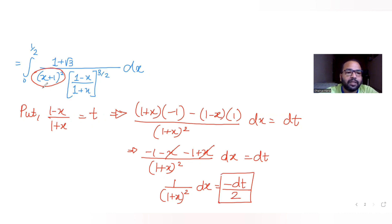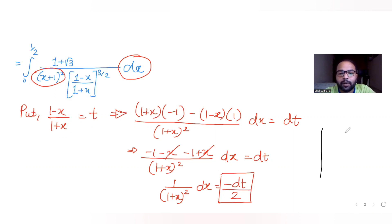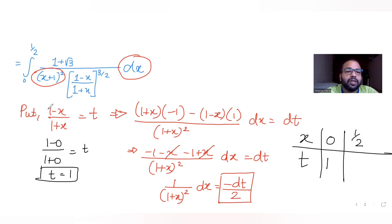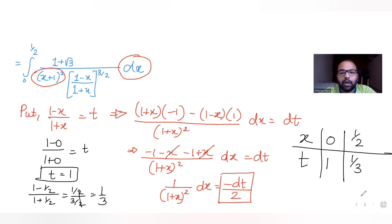So dx/(1+x)^2 equals −dt/2. The limits also change: when x=0, t = (1−0)/(1+0) = 1; when x=1/2, t = (1−1/2)/(1+1/2) = (1/2)/(3/2) = 1/3. So t goes from 1 to 1/3.